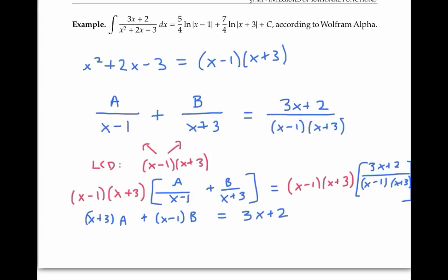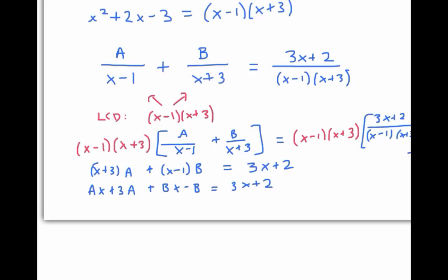I'll distribute the left side a little further. And I'm going to group the terms that involve x and the terms that don't involve x. If I want this equation to hold true for all values of x, then I need the coefficients of x to be the same on the left and the right. So I need a plus b to equal three. Similarly, I need the constant term to be the same on the left and the right. So I need three a minus b to equal two.